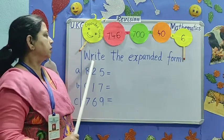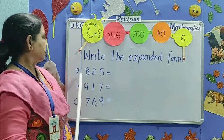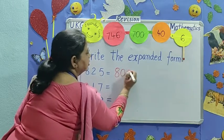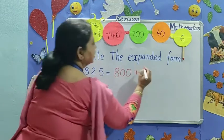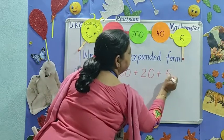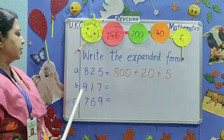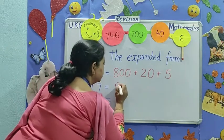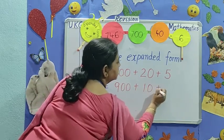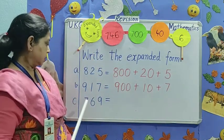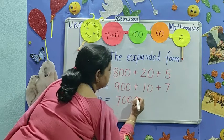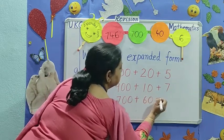Read the question. Write the expanded form. 825. 800 plus 20 plus 5. Next number is 917. 900 plus 10 plus 7. Next number is 769. 700 plus 60 plus 9.